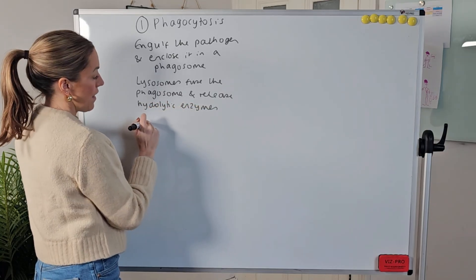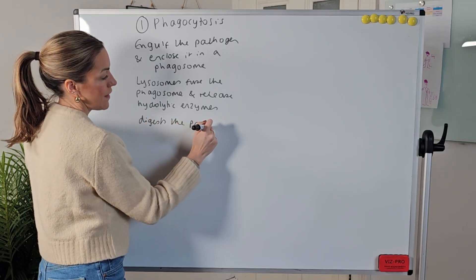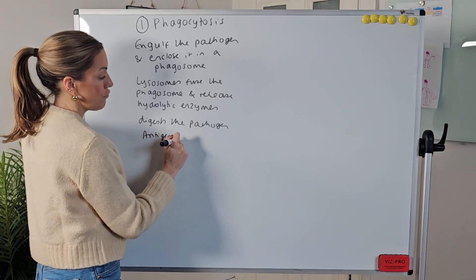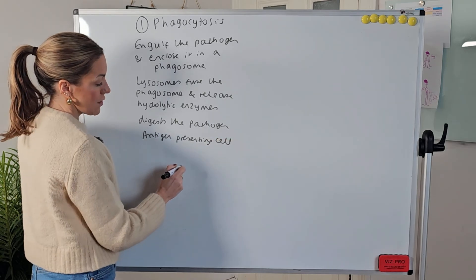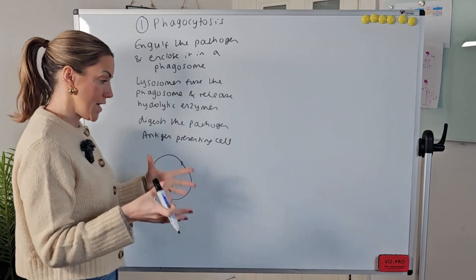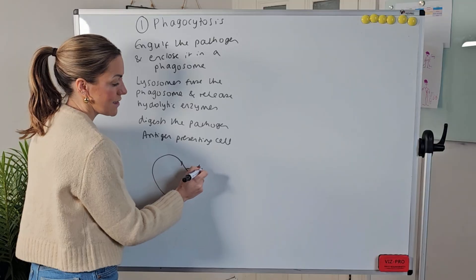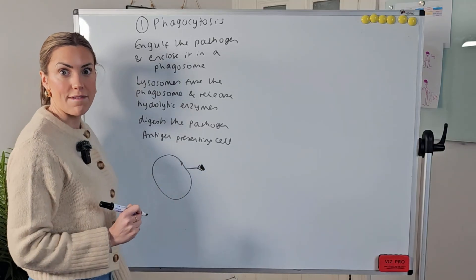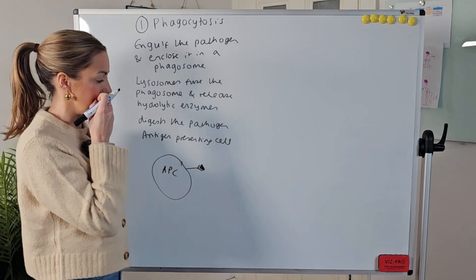This digests the pathogen or hydrolyzes the pathogen and then the phagocyte itself becomes an antigen presenting cell. Okay so I'm going to draw my phagocyte here. It's engulfed and destroyed the pathogen and enclosed it in the phagosome. Hydrolytic enzymes have digested it. It's now going to present the foreign antigens on its cell surface membrane. This is what we call a phagocyte acting as an antigen presenting cell.